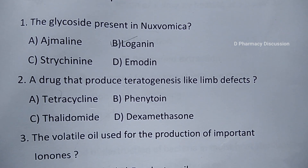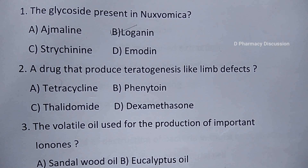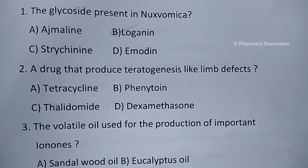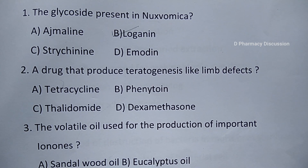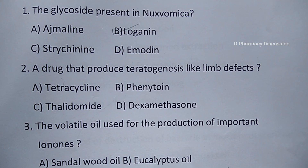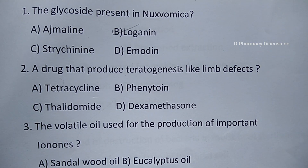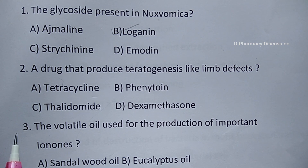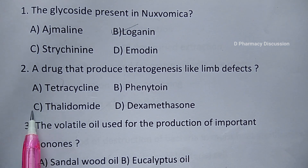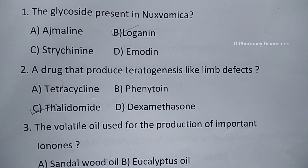Second question: a drug that produces teratogenesis like limb defects. Option A. Tetracycline, B. Phenytoin, C. Thalidomide, and option D. Dexamethasone. Correct answer is option C, that is Thalidomide.